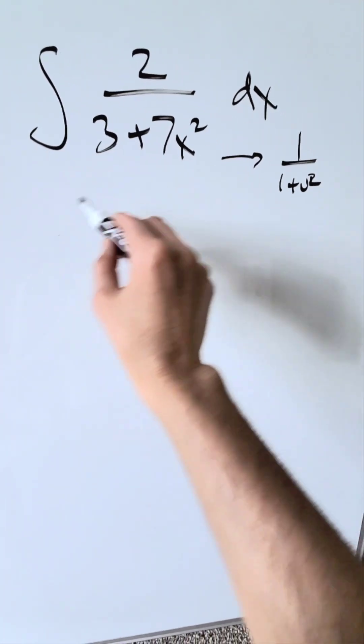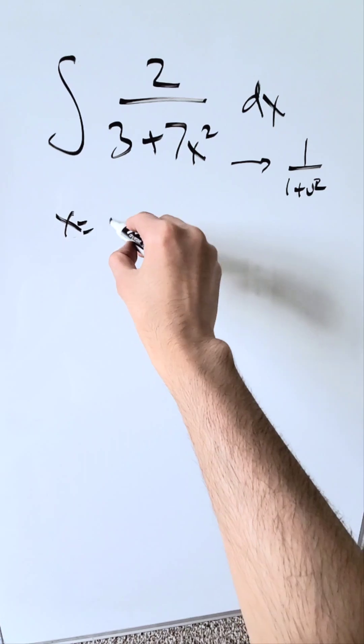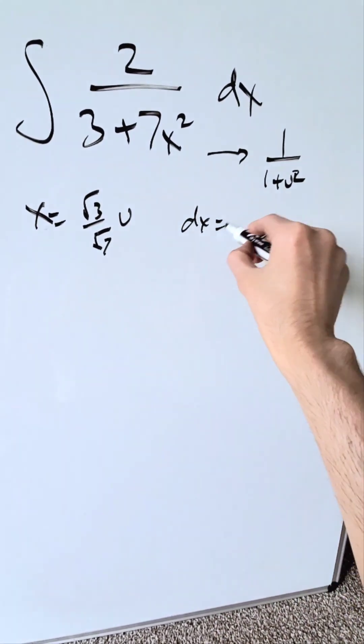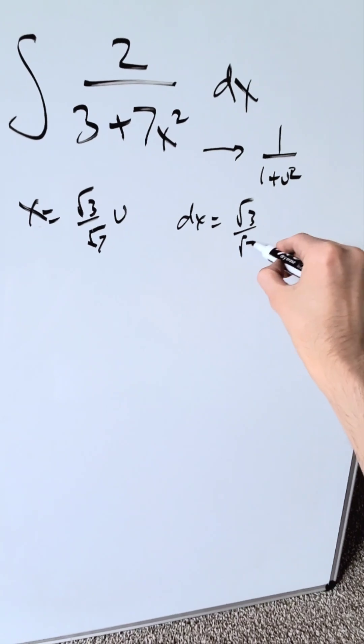How will we do it? By good substitution for x. If x were to equal root 3 over root 7 u, then you know dx would be equal to root 3 over root 7 du.